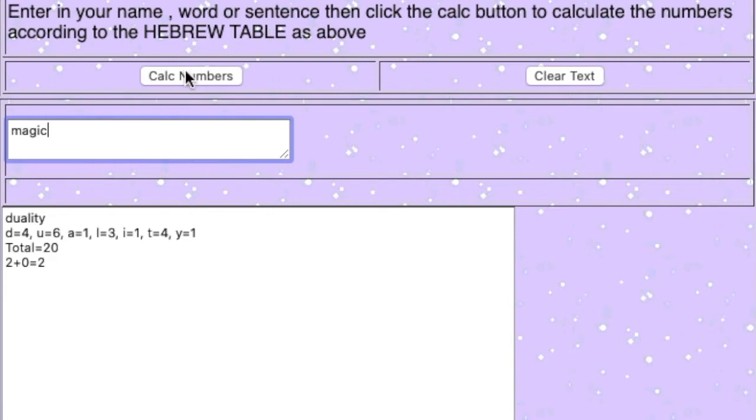This is because the Chaldean numerology system is not as easy to master, and the alphabet values are not in as systematic an order as the other numerology systems.